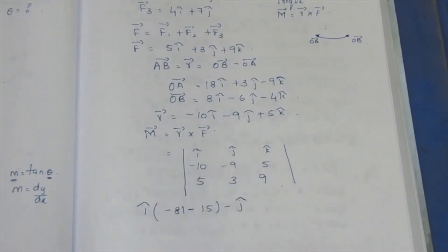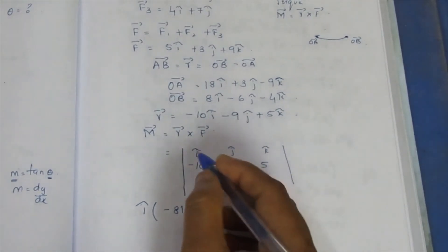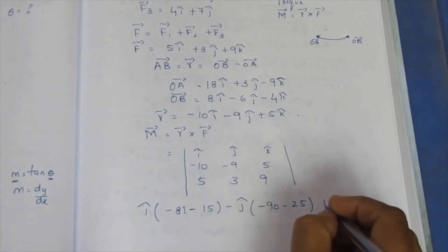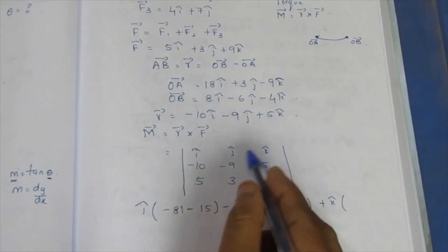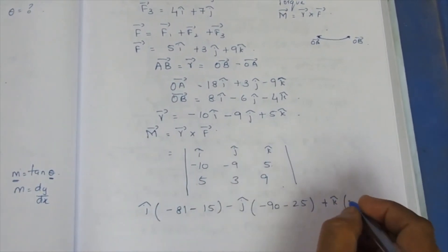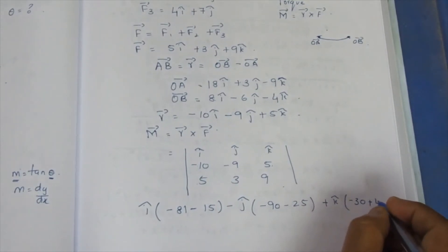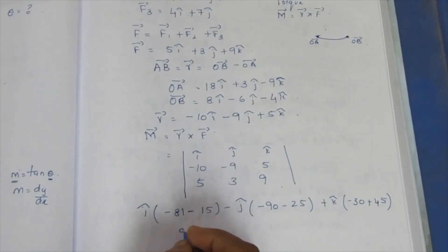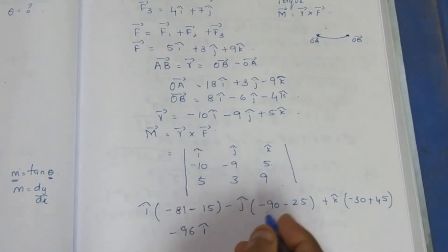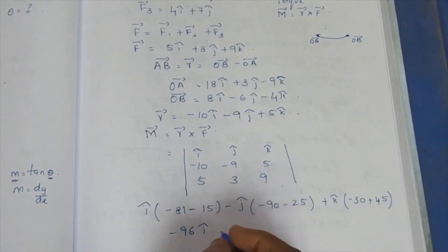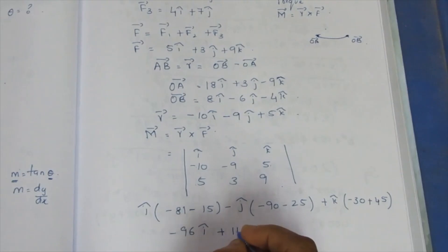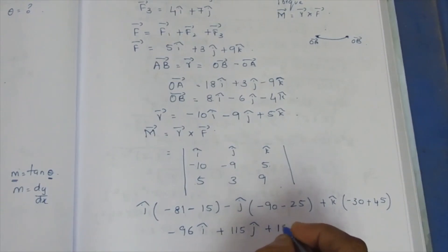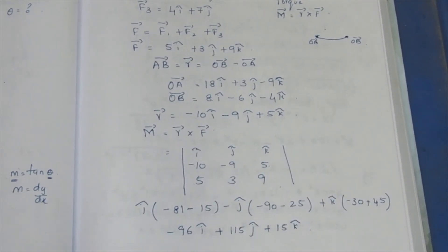For i-cap we get that value. Minus j-cap: row and column multiply gives minus 90 minus 5, and 5 times 5 is 25. Plus k-cap: row and column multiply gives minus 30, minus into minus is plus, and 5 times 45. Solving these: i-cap gives 6 and 9 combined; minus into minus gives plus for j-cap, giving 115j-cap; and plus 15k-cap. So M-vector equals the final answer.